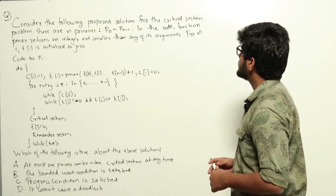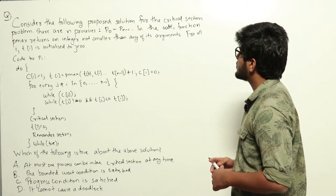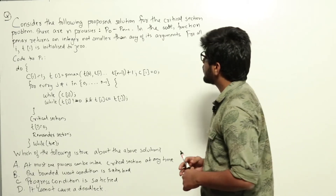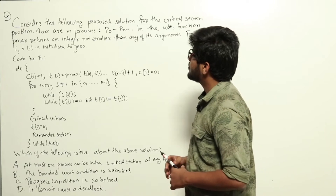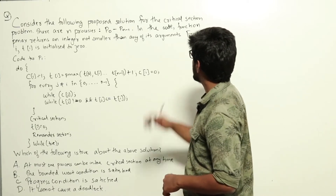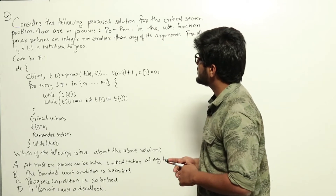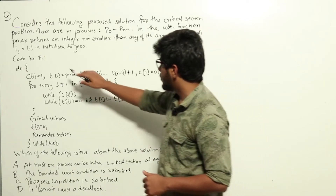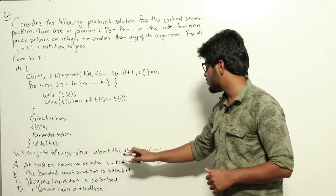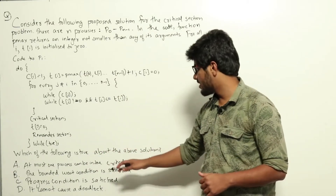Consider the following proposed solution for the critical section problem. There are n processes p0 to pn-1. In the code, function pmax returns an integer not smaller than any of its arguments. For all i, t[i] is initialized to 0. The code for pi is given here. They are asking which of the following is true about the above solution, with four options given.